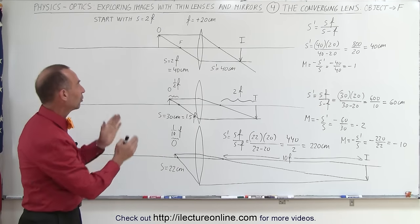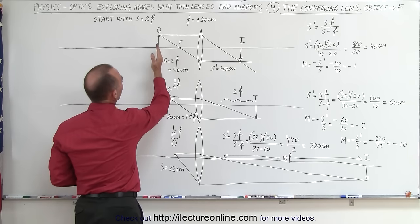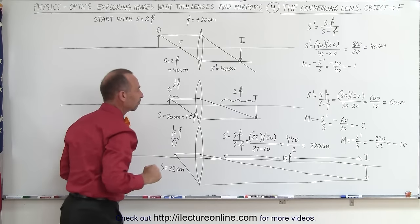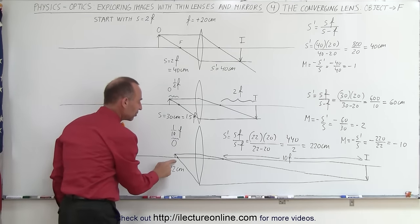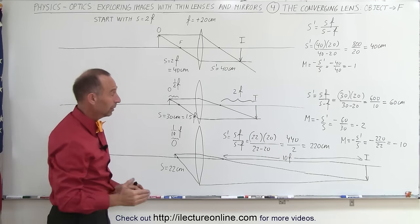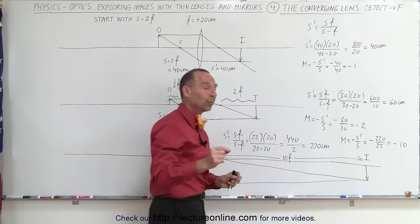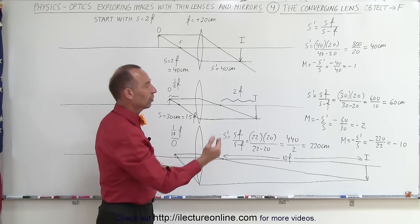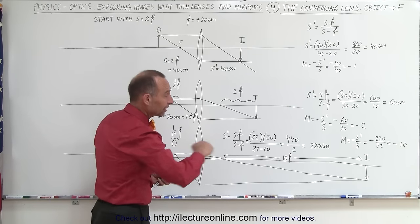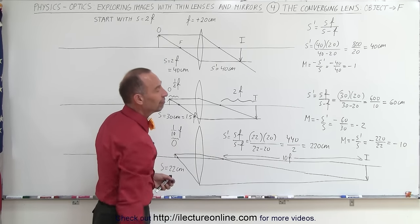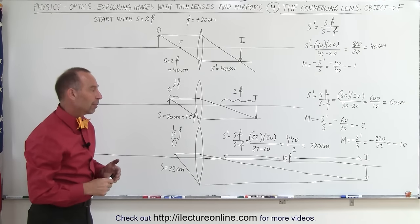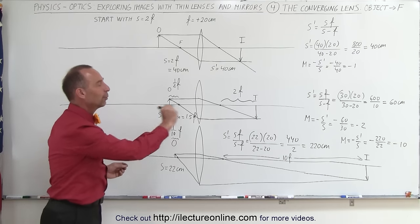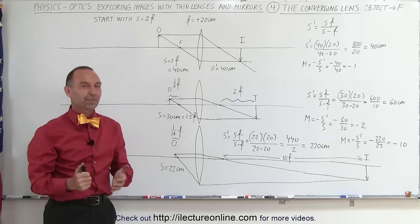That's the relationship between object and image as you start at twice the focal length and move closer and closer to the focal point. In the limit as the object approaches the focal point, the image will continue moving farther and farther back — at the focal point, the image will be infinitely far away and infinitely large, with an infinite negative magnification. From a practical perspective, you always want to place the object slightly in front of the focal point if you want a real image on the other side of the lens.